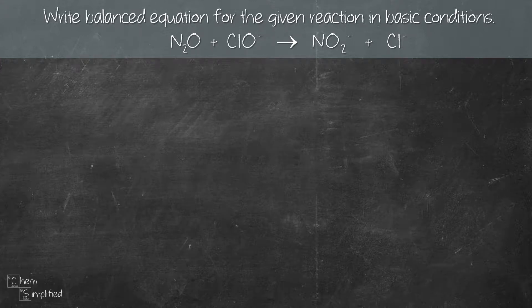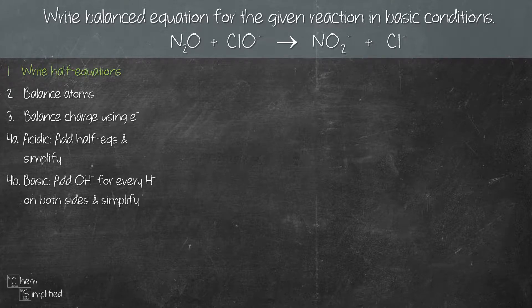We are going to write a balance equation for the given redox reaction. The question is asking for basic condition, and if you're looking to balance the equation in acidic condition, do stick around because these four simple steps that we're going to use will give us the balance equation in both acidic and basic condition. So let's get started.